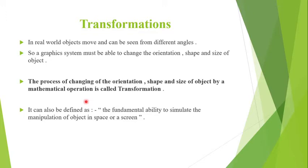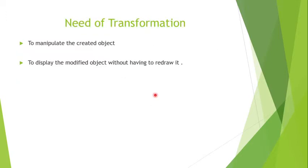Every time an object changes orientation, shape, and size, we cannot draw it again and again. So by using transformation, we can transform an object when it changes orientation, shape, and size without having to redraw it. The process of changing orientation, shape, and size of an object by mathematical operation is called transformation. The basic need of transformation is to manipulate an object on screen without having to redraw it.